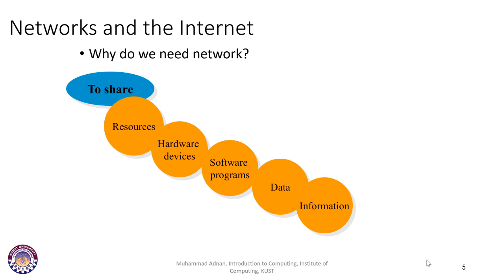We need computer networks primarily to share resources — hardware devices like printers, monitors, hard disk storage space, scanners, and cameras connected to many devices. We also share software programs that can be distributed to multiple computers. More importantly, we share data and processed information. These are the key benefits that computer networks provide.